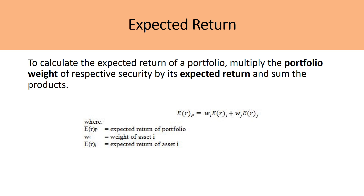To calculate the expected return of a portfolio, we have to multiply the portfolio weight of the respective equity by its expected return and sum the products. The formula looks at a two-stock portfolio with stock I and stock J. By multiplying the weight of stock I by its expected return and adding that to the product of the weight of stock J by its expected return, we get the expected return for the portfolio. This formula can be expanded to include 50 or even 1,000 assets — we just account for each asset's weighting and its expected return.